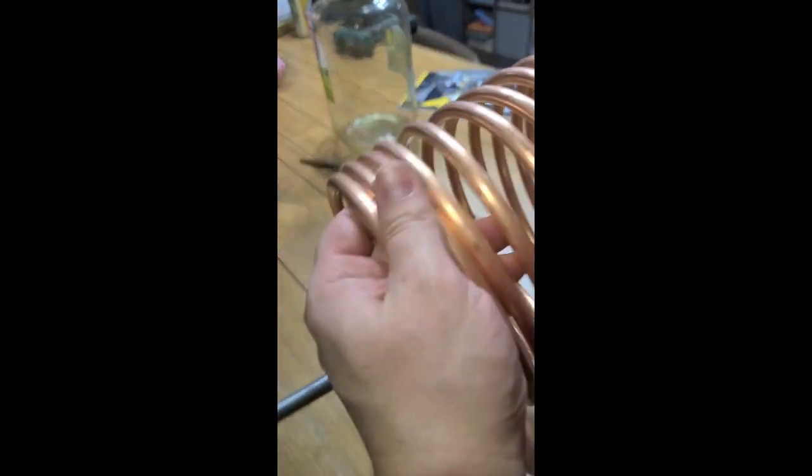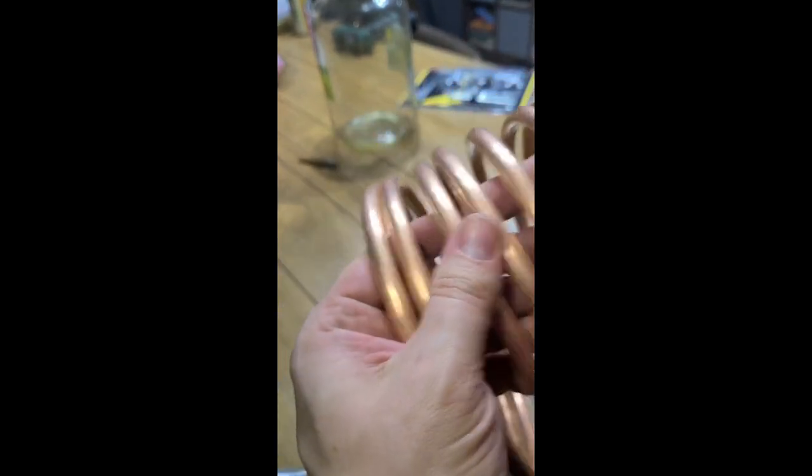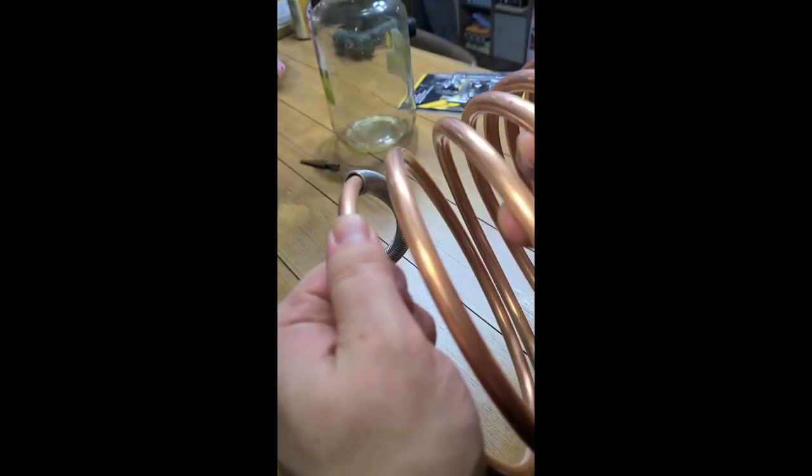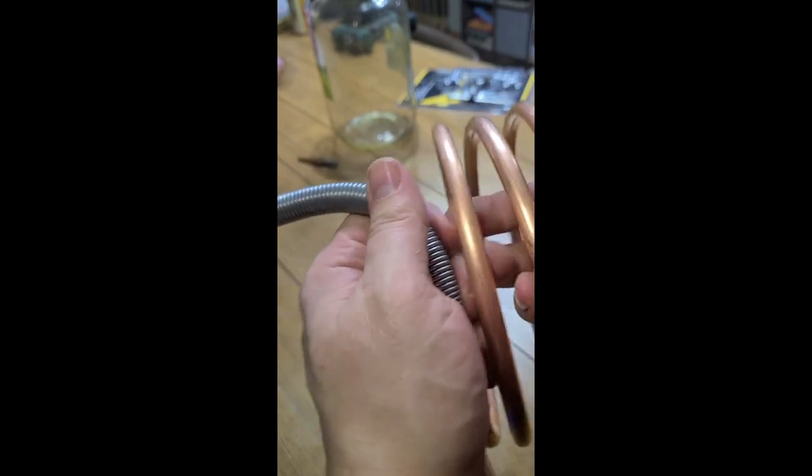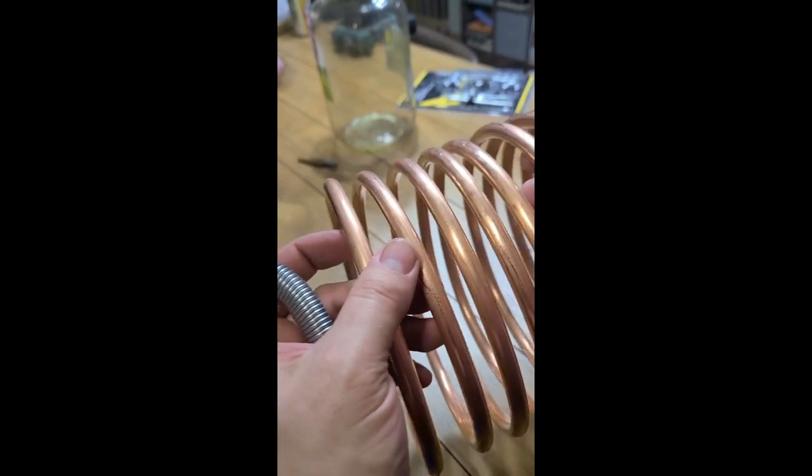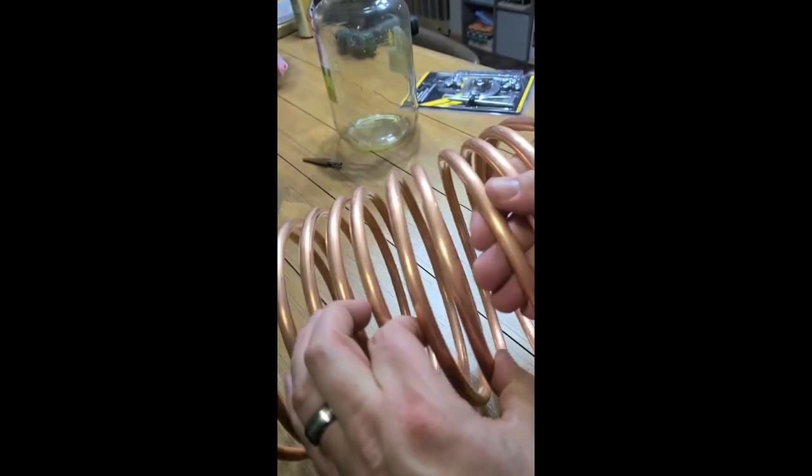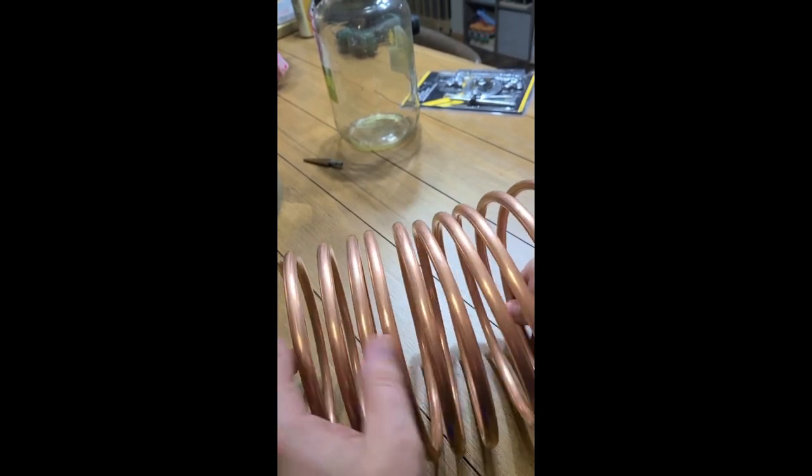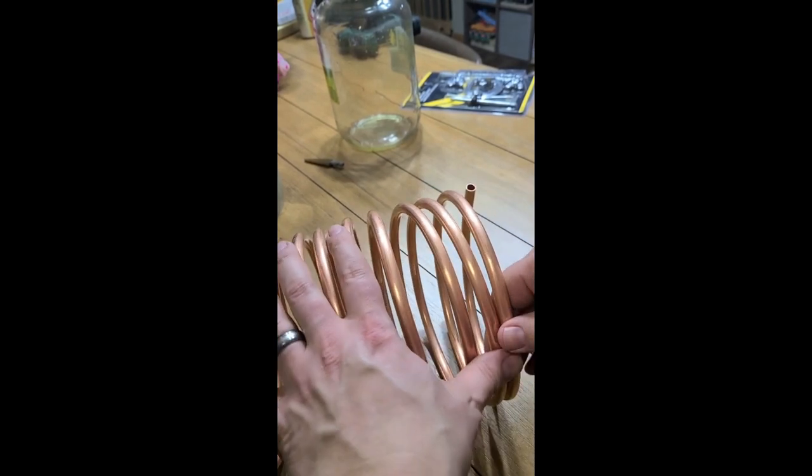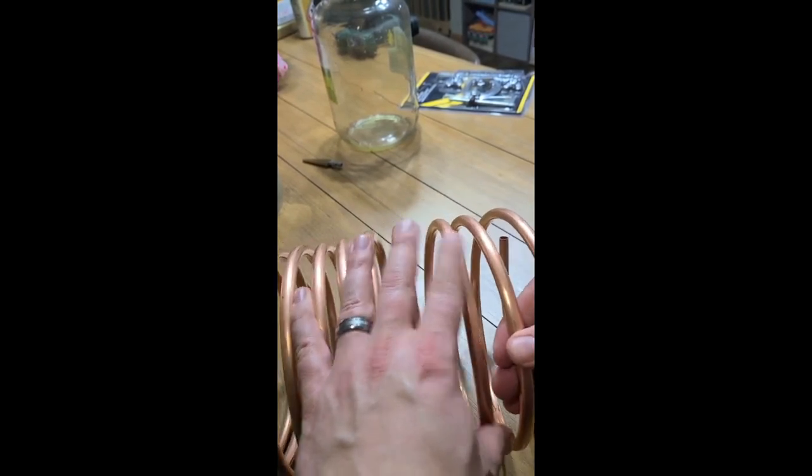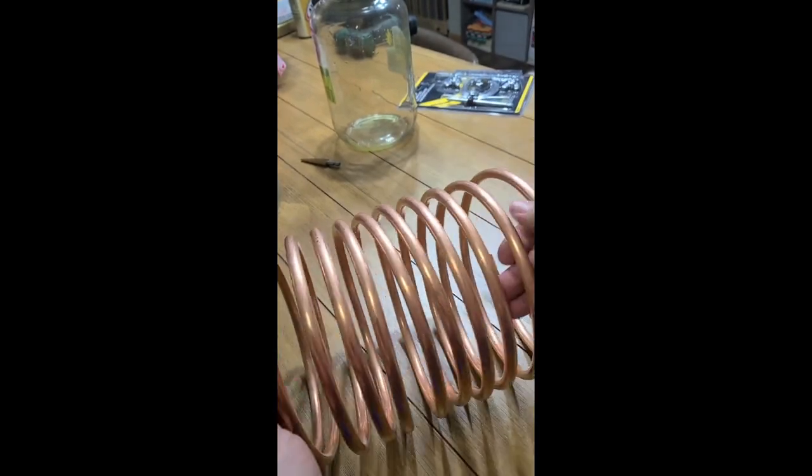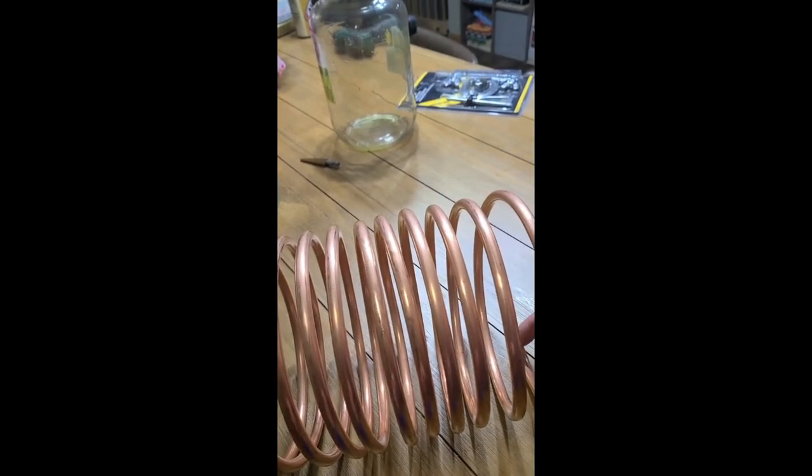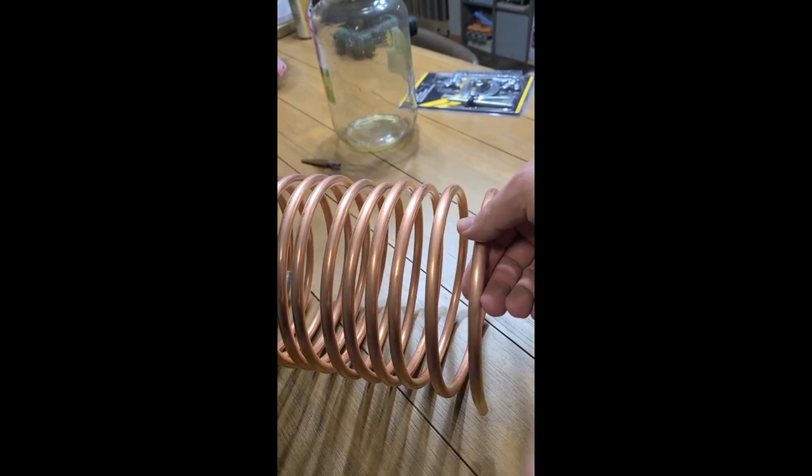All right, so now we're just going to get in there and pull these coils apart some so we can get some water flow in between to help condense our vapor. That looks pretty good there. We'll bend this out and have it pop through the bucket.